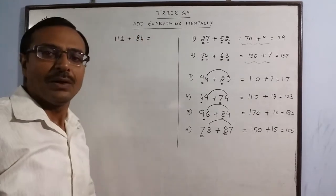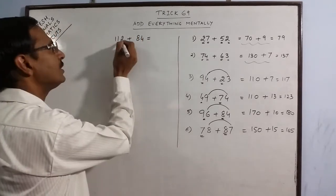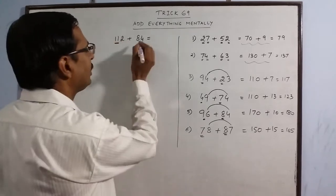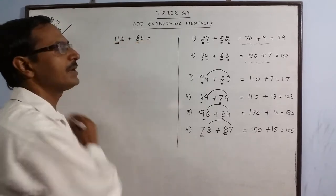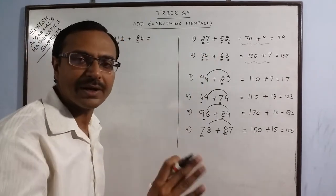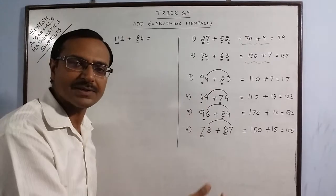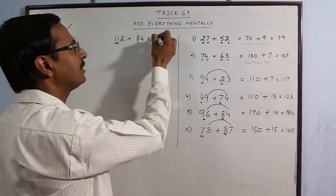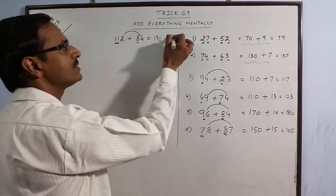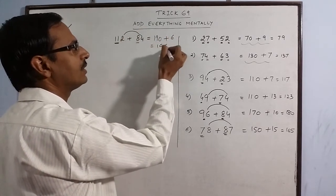Now see, what you do is, you can just leave the units place and the remaining number is 11. Leave the units place. Remaining number is 8. Now apply the same method as I told you here. Forget that we have 3 digit numbers. Apply the same method. 11 plus 8 is 19. Put 1 0. 2 plus 4 is 6. So 196 is the answer.